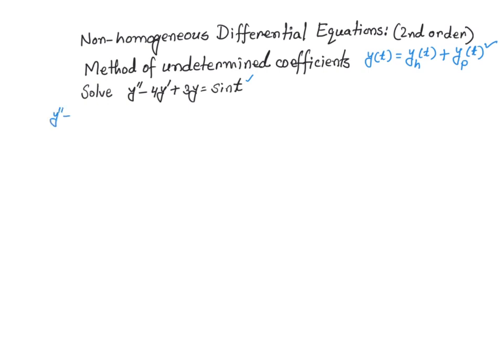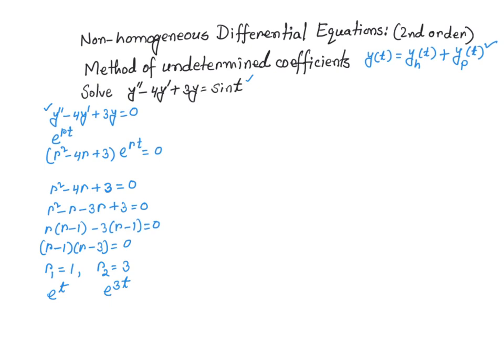y double prime minus 4y prime plus 3y is equal to 0. We are going to use the usual substitution — we assume that our solution to the second-order differential equation is of the form e^(rt). If I take the first and second derivative and substitute into this differential equation, I will have the characteristic equation. Doing that, we get r² minus 4r plus 3 equals 0.